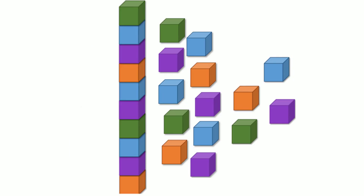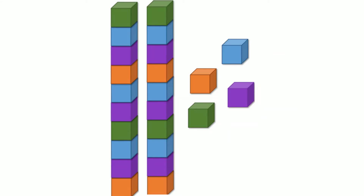Let's make a group of ten. Do you estimate that there are enough blocks left to make another group of ten? Let's make another group of ten. How could we describe these groups of blocks? Do we have some tens and some ones? Now that we've grouped the blocks into tens and ones, how could we count them? Do we have two tens? Do we have four ones?